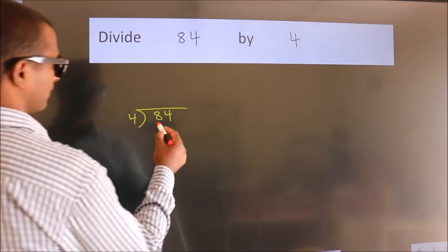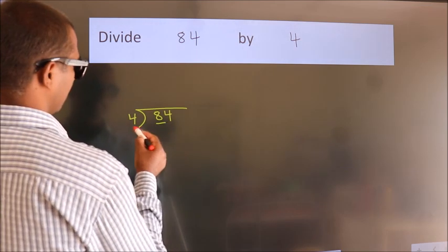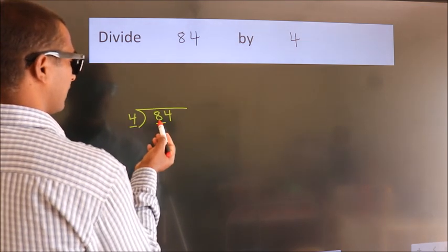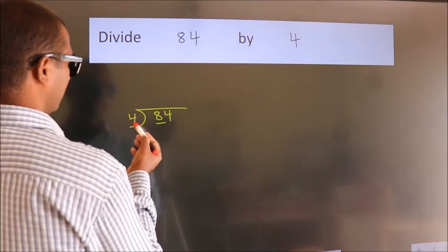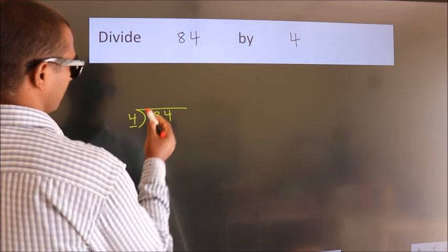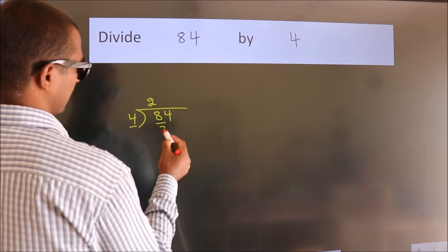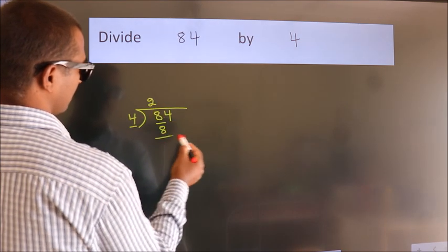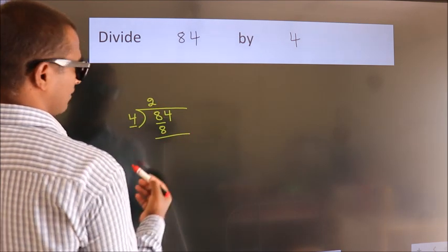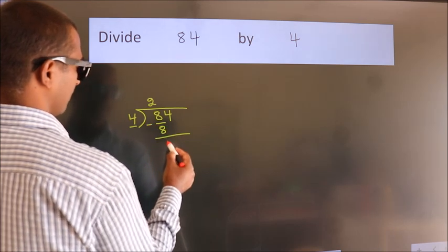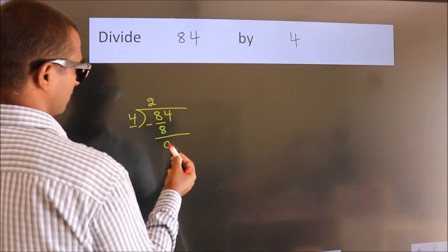Here we have 8, here 4. When do we get 8? In the 4 table. 4 twos are 8. Now we should subtract. We get 0.